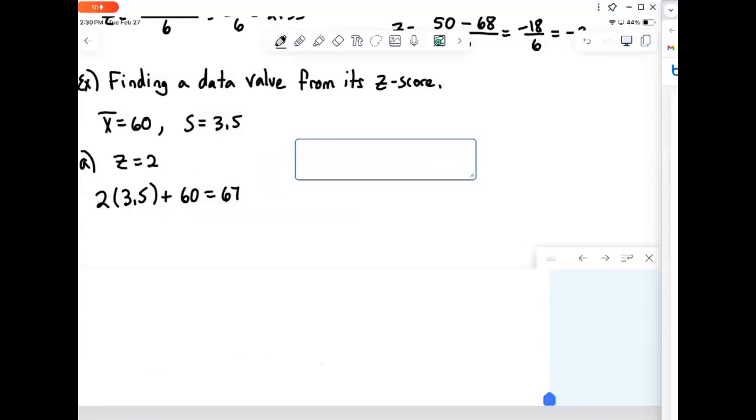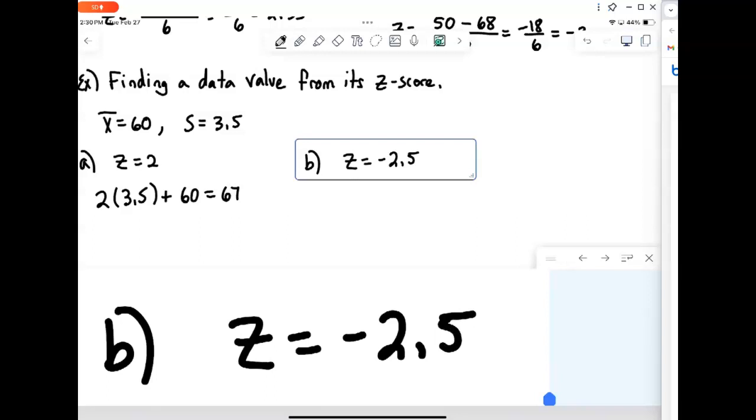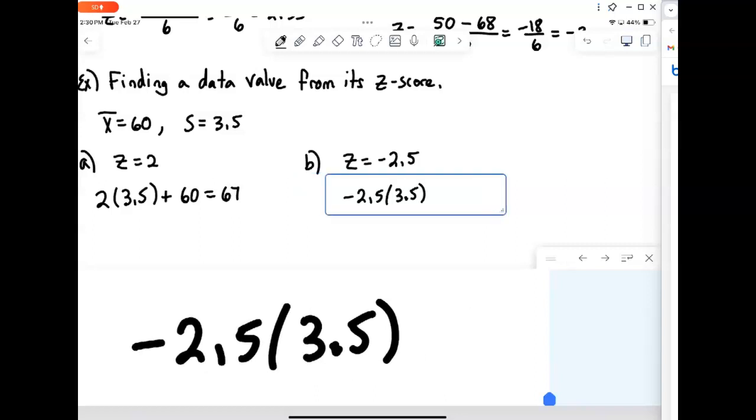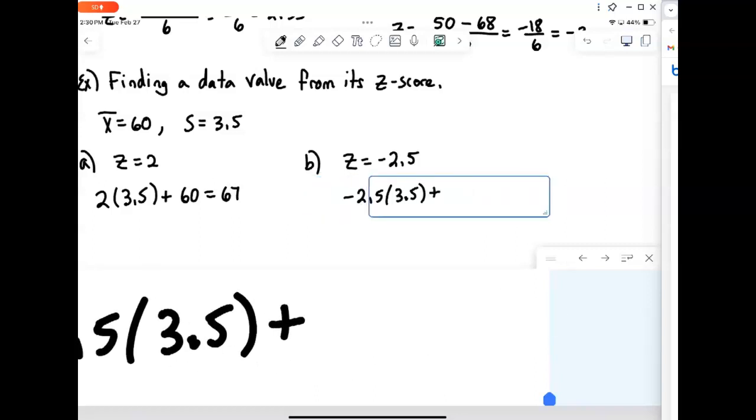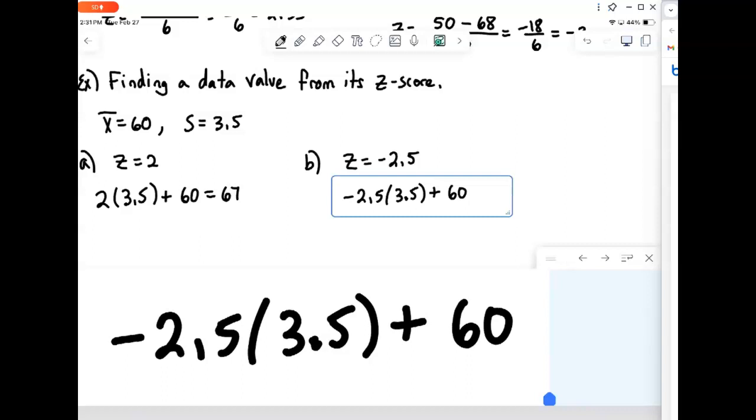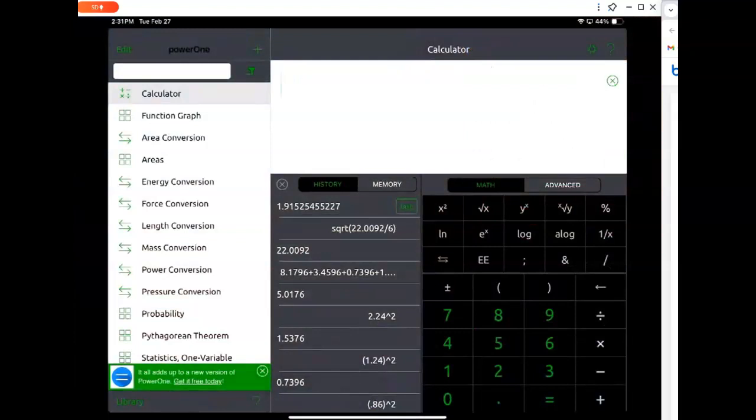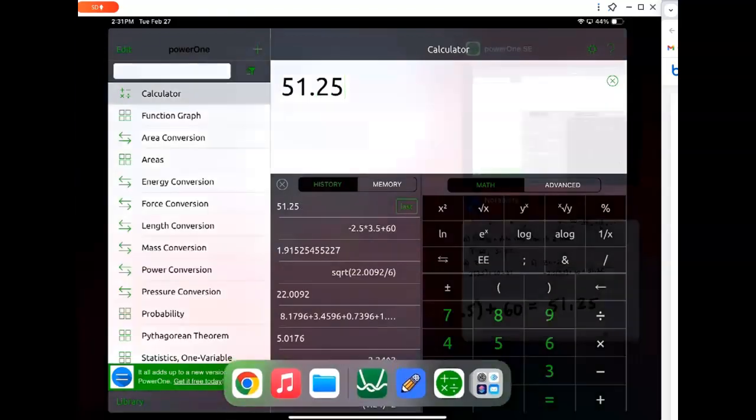On the other hand, what if our z-score was negative? Like z equals negative 2.5. Well, that tells us we're 2 and a half below. So I just take the negative sign along with it. Negative 2 and a half standard deviations. And the negative is already going to take care of everything below the mean. Plus 60. And then again, that just becomes a quick little computation. Negative 2.5 times 3.5 plus 60. And we get that it's 51.25.